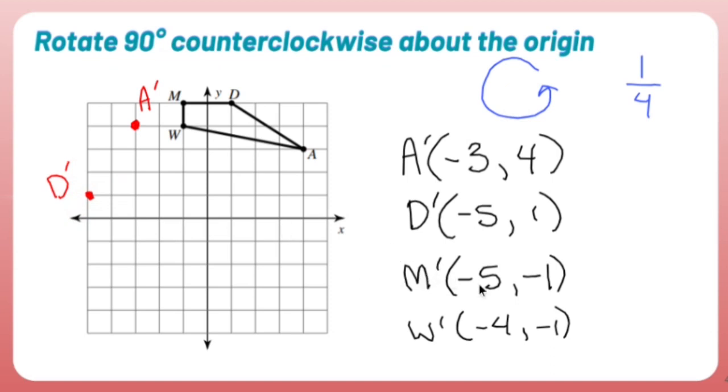M prime was negative 5, negative 1. In other words, left 5, down 1. So M prime is left 5, down 1, down 1, M prime.